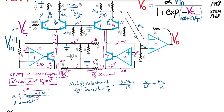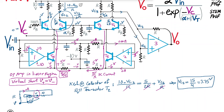The KCL equation simplifies nicely — the R terms cancel — giving: (10 − V_C2)/R = 5/(2R) + V_C2/R, which yields V_C2 = 15/4 = 3.75V. So the steady-state DC voltage at the collectors of both T2 and T3 is 3.75V.